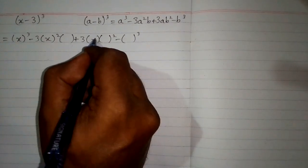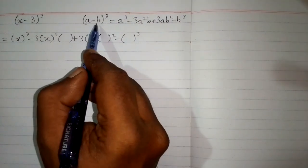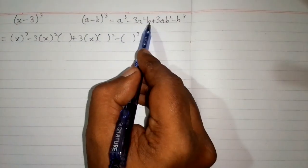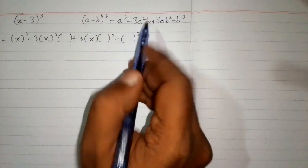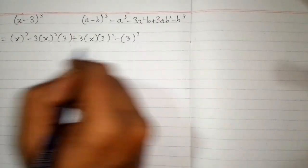And similarly we have 3 in place of b. So we will put 3 in place of b. We can write 3 in the respective brackets.